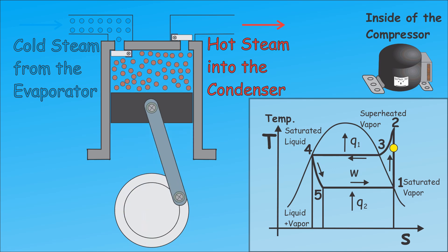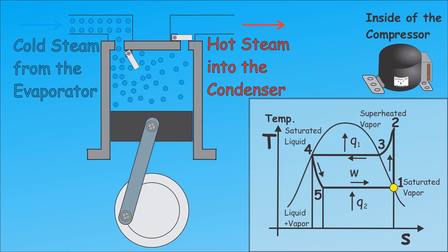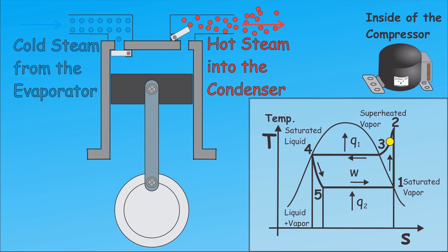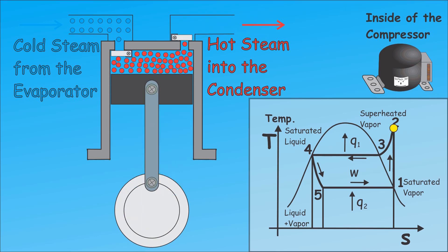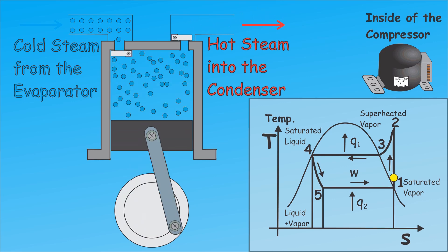Cold refrigerant from the evaporator in form of saturated or wet steam enters the compressor, inside which it gets compressed to the state of overheated steam, which is also shown on the graph.